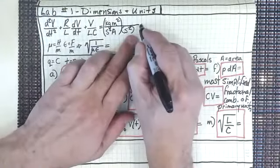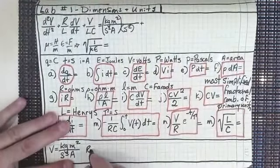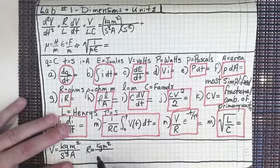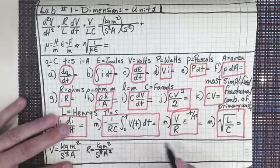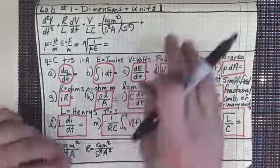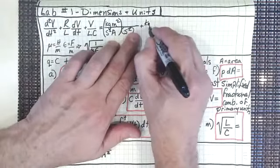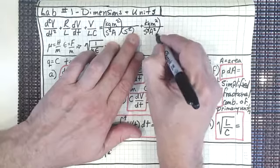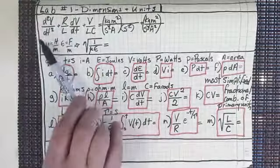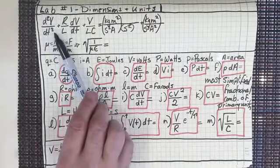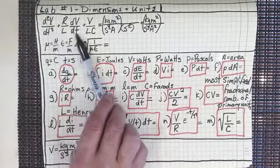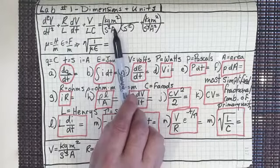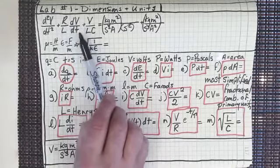Now let's look at R. Resistance is in ohms: kilogram meter squared per seconds cubed amp squared — that's what we know from the lectures. Because of dimensional homogeneity, whatever units we get for d²v/dt² should be exactly the same as for R/L · dv/dt. Let's verify that.